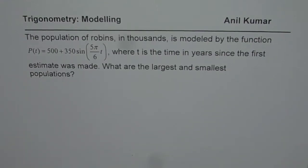I am Anil Kumar and here is a question to understand trigonometric equations. The population of robins in thousands is modeled by the function P(t) = 500 + 350 sin(5π/6 t), where t is time in years since the first estimate was made.